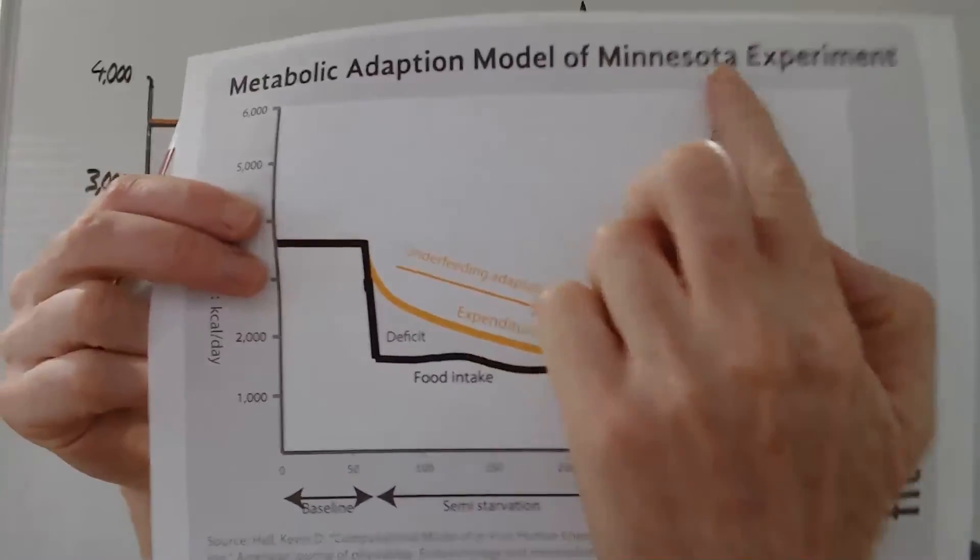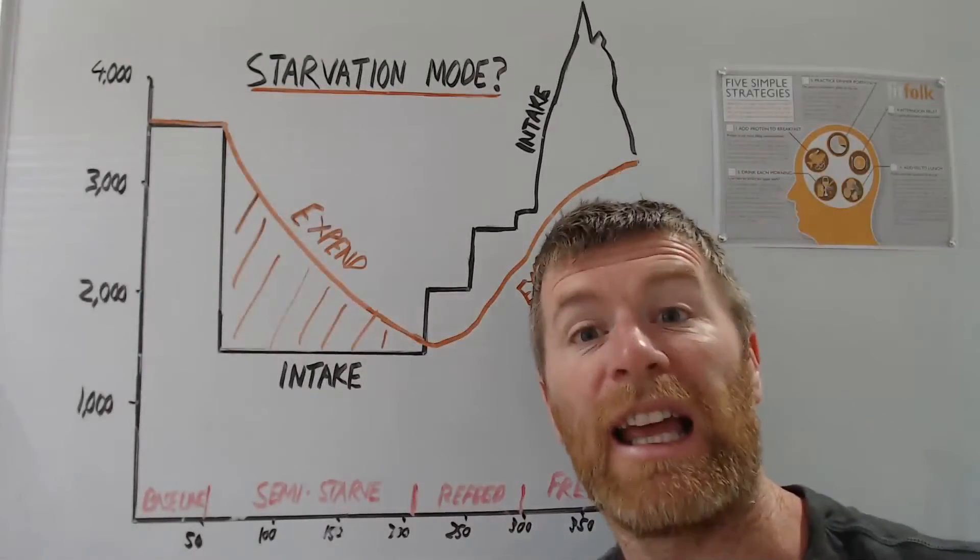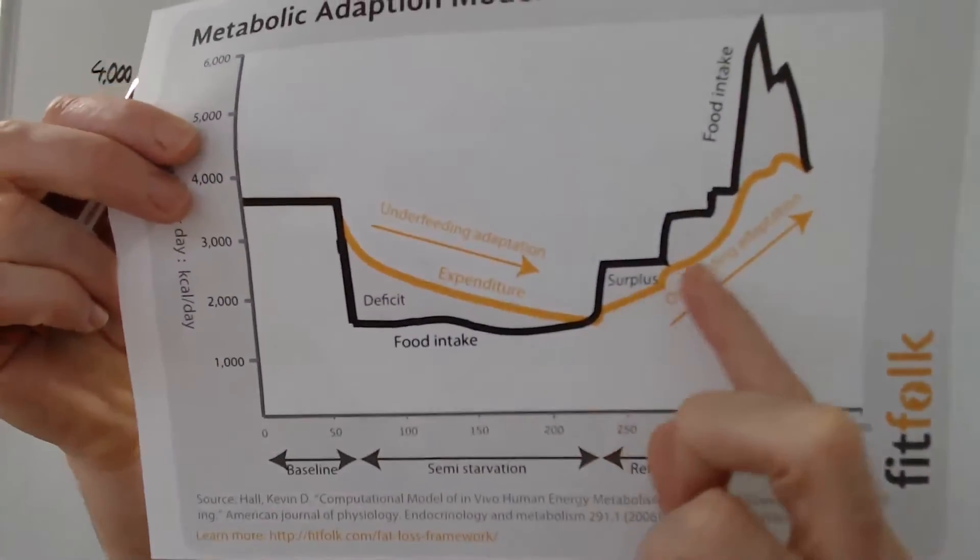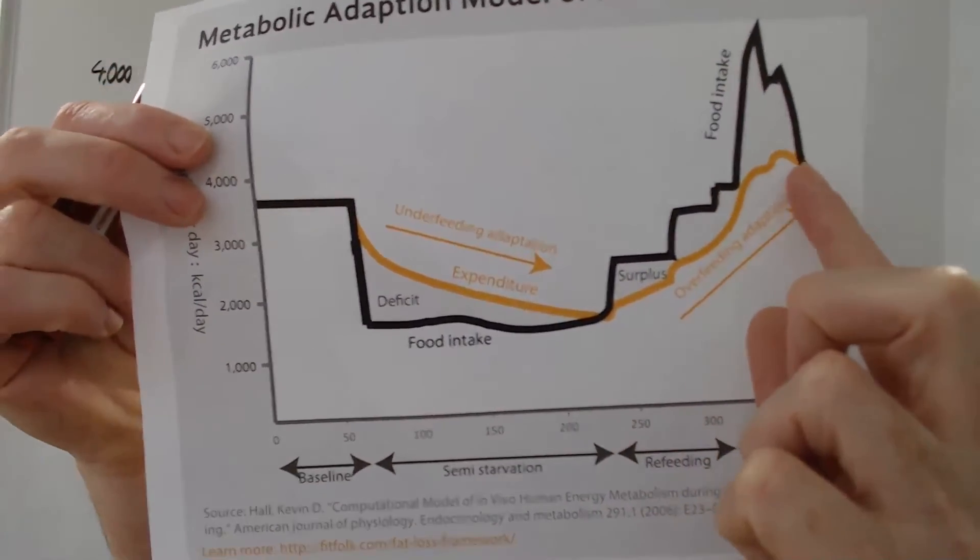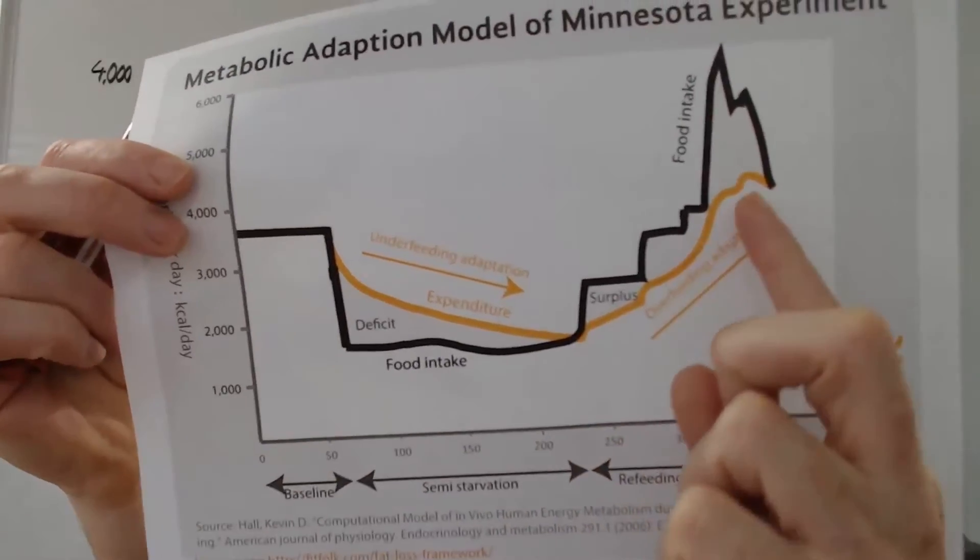This is it here, where the orange line shows this stuff. Basically, their metabolic rate, when their fat mass recovered, their metabolic rate recovered. And they measured their resting metabolic rate as well, and it also recovered.